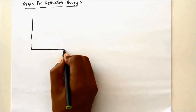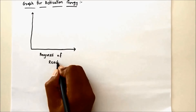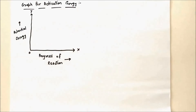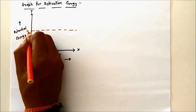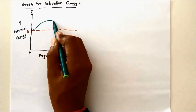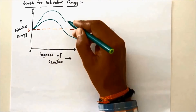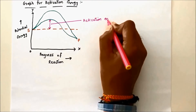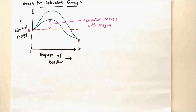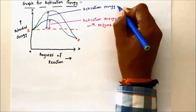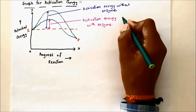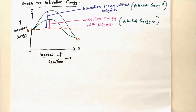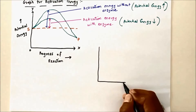For the activation energy graph, the X-axis represents progress of reaction and Y-axis represents potential energy. If potential energy is more, it means the enzyme is not present — activation energy is higher without enzyme. When the reaction takes place with enzyme, potential energy is less. Without enzyme, potential energy is more.